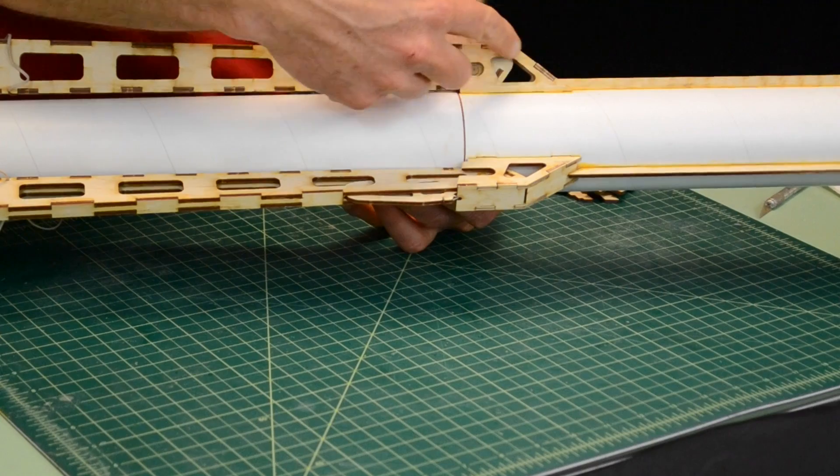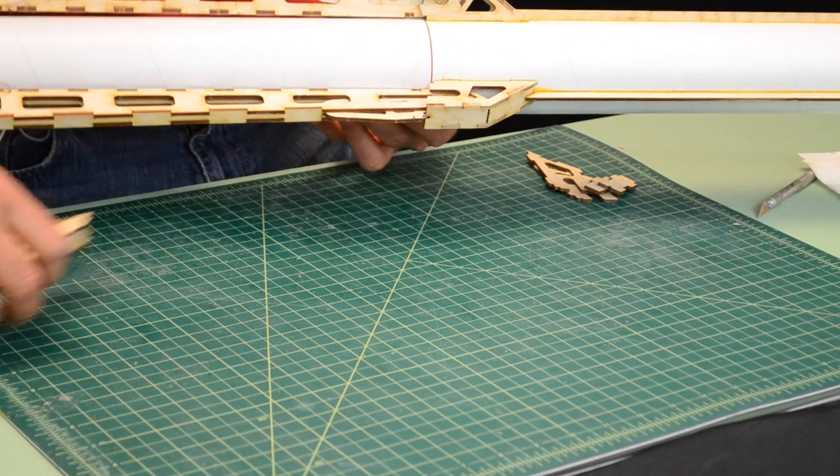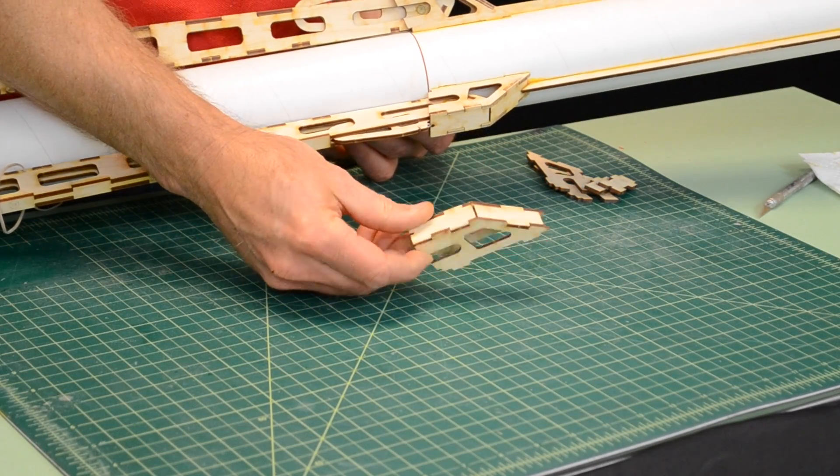I'd like to now assemble the hold down pockets, which are these pieces up here on the rocket. When they are assembled, they'll look like this.